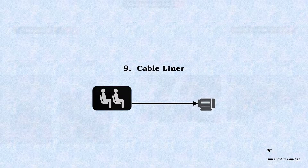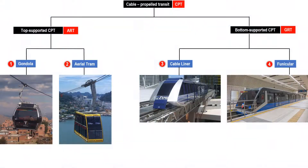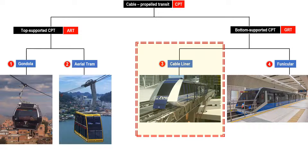Cable Liner. This is the chart showing the four different types of cable-propelled transit systems. In this chapter video, we will focus on the cable liner.